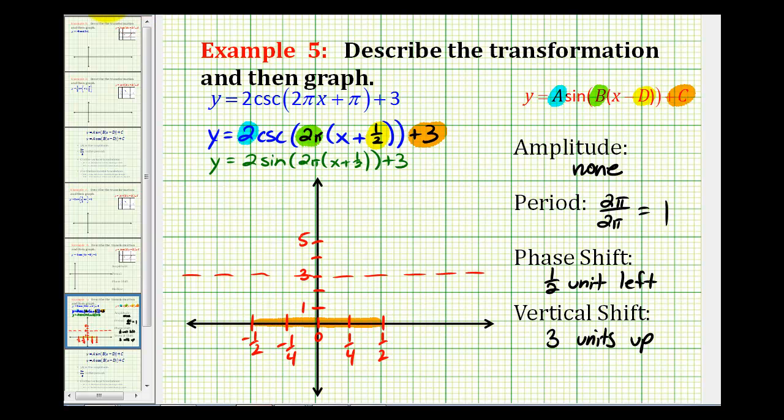So the sine function starts at the midline. The next fourth, it's up at a maximum. The next fourth, it's at the midline. The next fourth is at a minimum. And the next fourth is back at the midline.